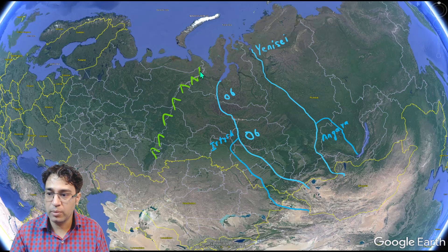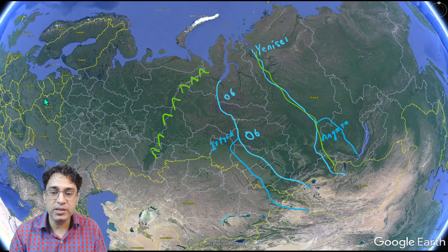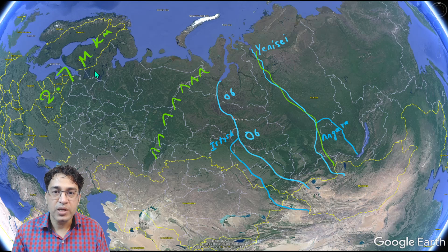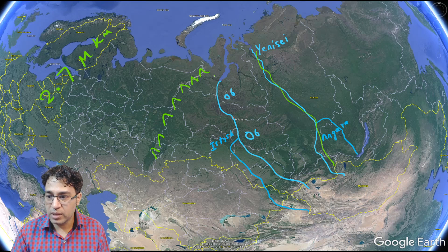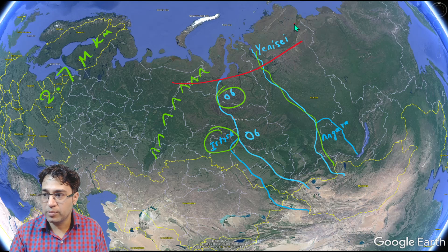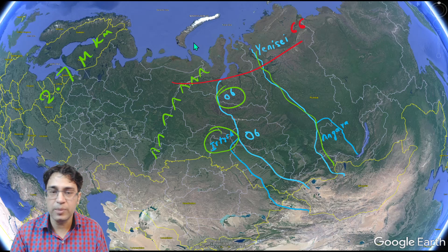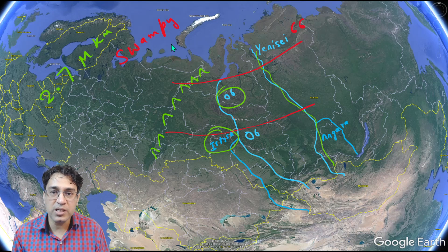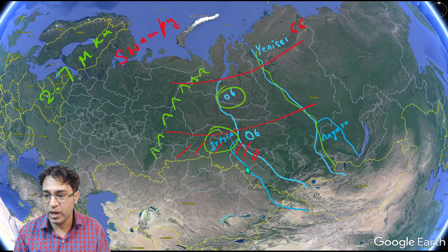The West Siberian Plains lie between the Ural Mountains and the Yenisei River. These plains are so large — covering 2.7 million square kilometers — that they are considered the world's largest single relief feature. Important rivers here include the Ob and its tributary the Irtysh. The region has three parts: the northernmost part above 66°N is a permafrost region; the central part is a swampy and marshy region with some of the world's largest marshes; and the southern part is relatively higher and drier, where most settlements are found.